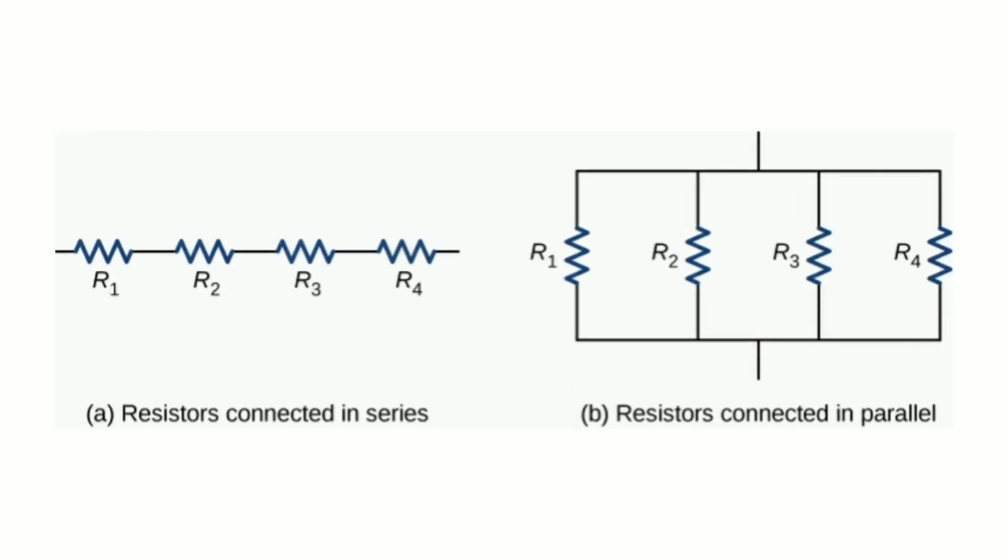Resistance of a system of resistors: The current through a conductor depends upon its resistance and potential difference (voltage) across its ends. In different electric circuits, resistances can be used in various combinations. There are two methods to combine resistances together.